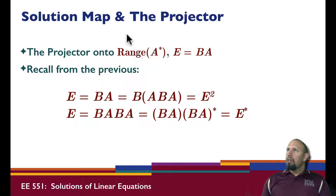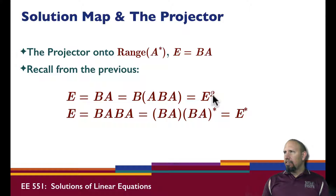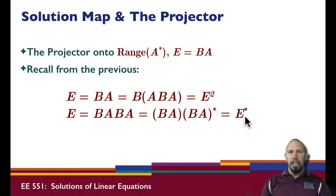What about the solution map and the projector? The projector onto the range of A-adjoint is needed for the under-determined problem. Here E = BA. Recall A = ABA, so BA times BA is E squared, meaning E = E². Also, BA is self-adjoint, so E is self-adjoint. We saw the projector for the over-determined case; this E is the projector for the under-determined case.